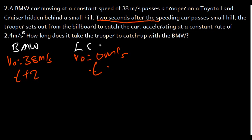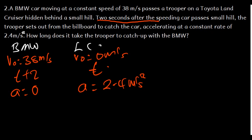Since the displacement must be the same when the trooper catches the BMW, we say D_BMW = D_Land Cruiser. For D1 (BMW), using displacement = V_initial × t + ½a·t²: the initial velocity is 38 and the acceleration is 0, so the second term vanishes. D1 = 38 × (T + 2).